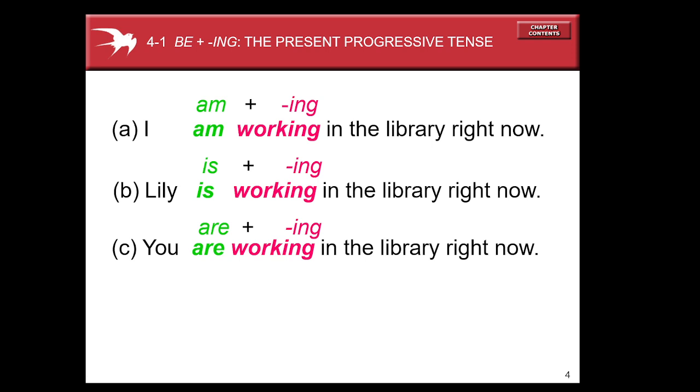Let's move on. Letter C. As you can see dear students we have another subject. You. In this case the verb to be must be different. Are. You are. You are working in the library right now. As you can see the verb to be in the present is divided into three different words. So we have three different sentences expressing the same action with different subjects. Let's read it again. Letter A. I am working in the library right now. B. Lily is working in the library right now. C. You are working in the library right now.